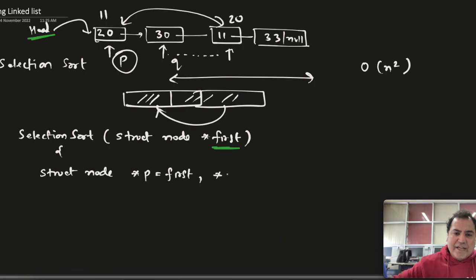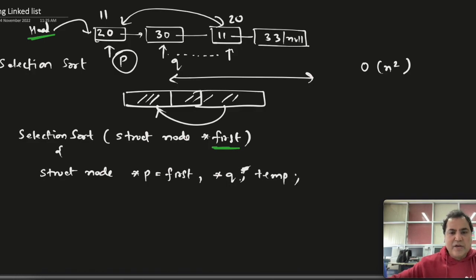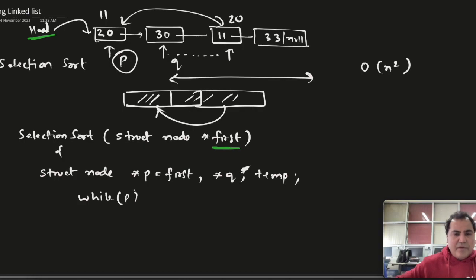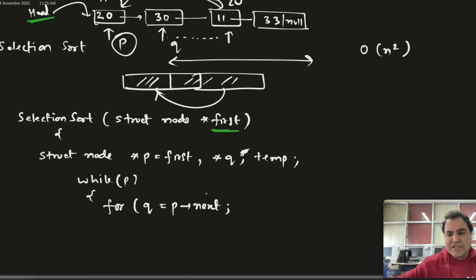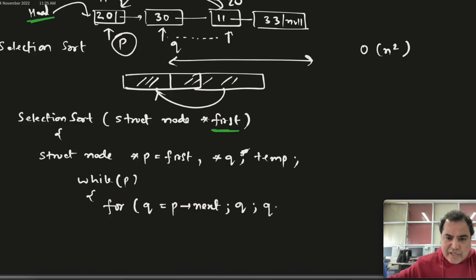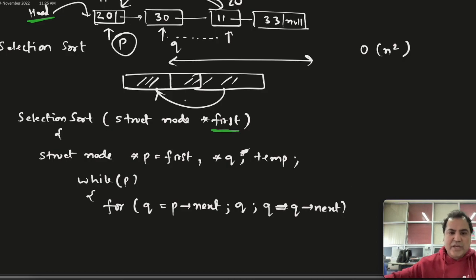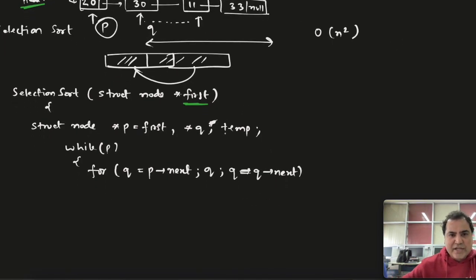I also need one pointer q and a variable temp. Then I write a while loop: while p has some value, keep repeating. Inside, I initialize q equal to p->next. Then with a while loop, while q has some value, keep moving q: q equal to q->next. This inner loop keeps moving q in the right direction for every value of p.